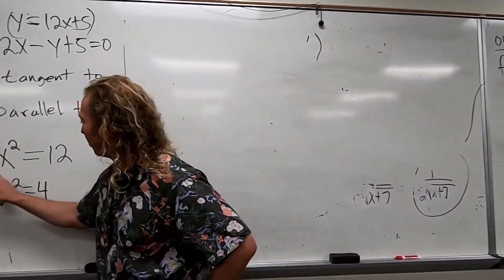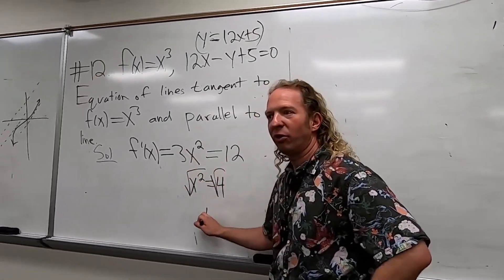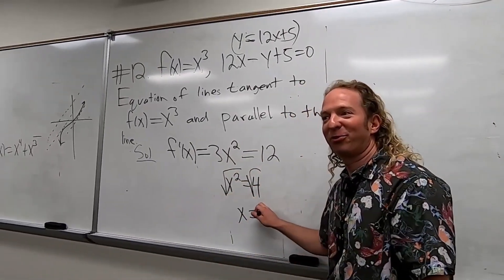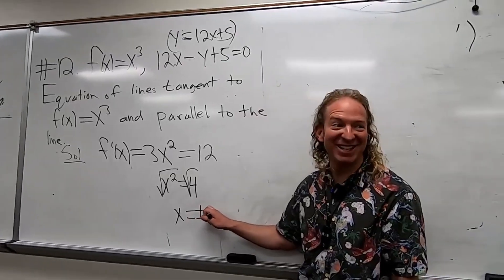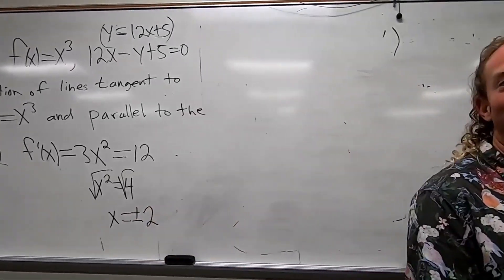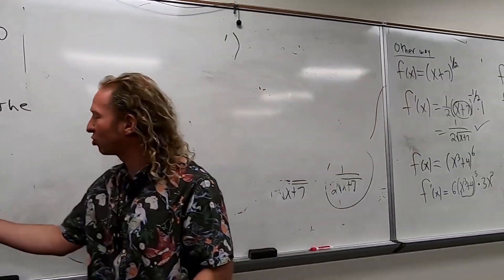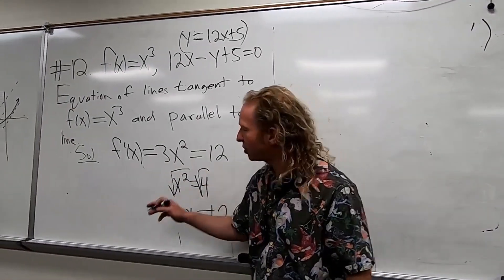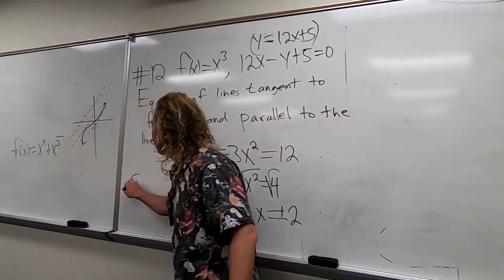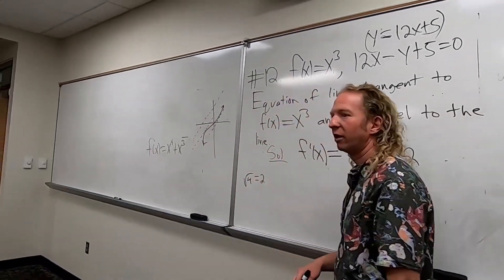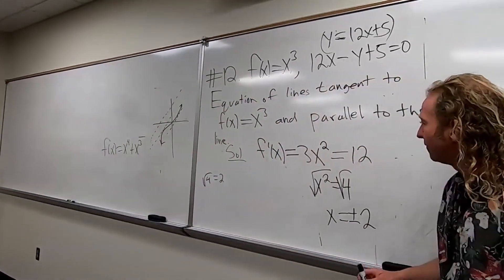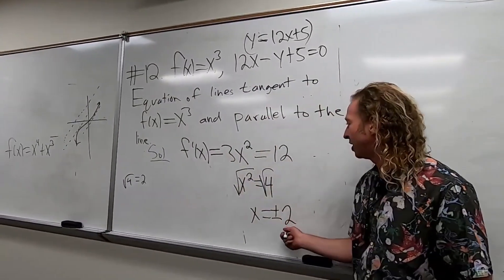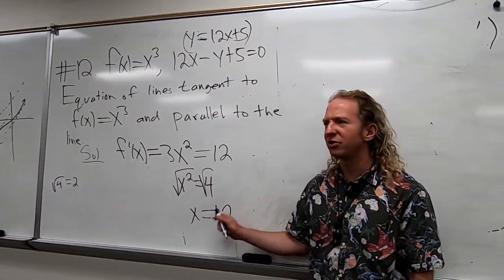And then when you take the square root, what do you get? Plus or minus. Yeah, really important. You get a plus or minus 2. That always happens when you take the square root of a variable squared. You always get a plus or minus. If you just have the square root of 4, that's 2. But if you have x squared equals 4, you do get a plus or minus. Any questions so far?